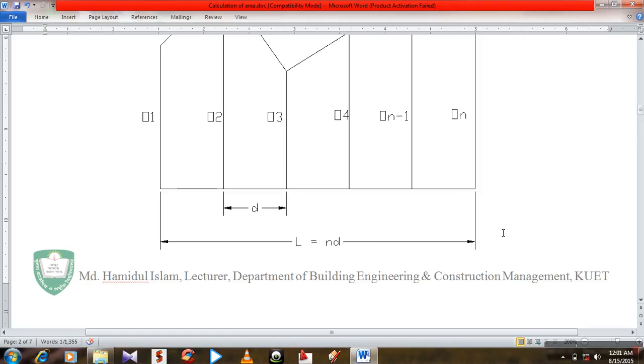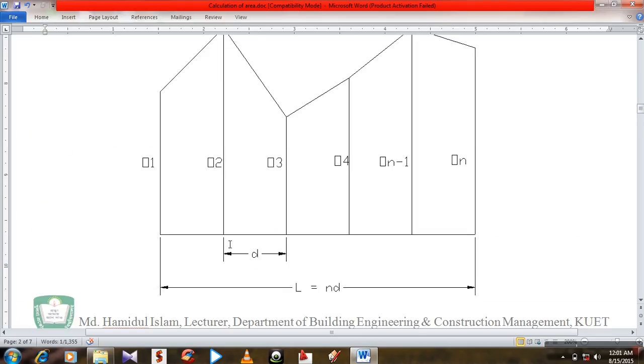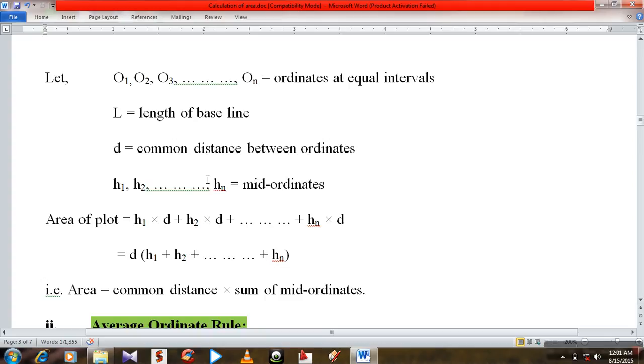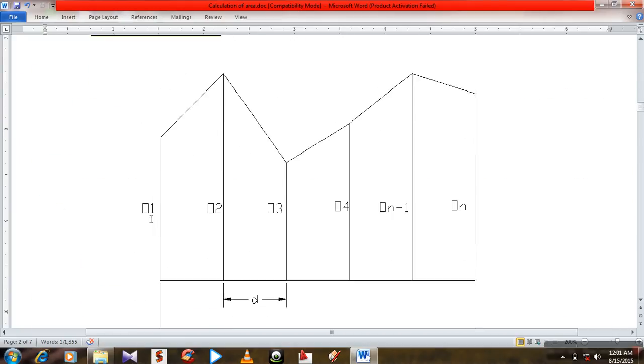Length of the baseline, L, D, common distance between ordinates. That means common interval. A1, A2, up to A7, mid-ordinates. That means for first O1, O2, A1 mid-ordinate. Here is the A1.